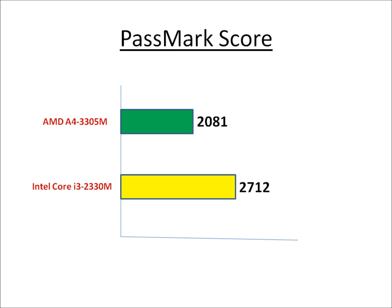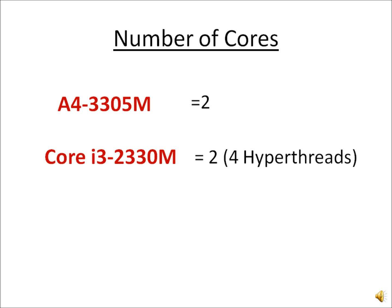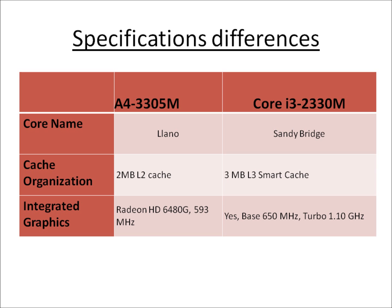In a nutshell, this Core i3's processor performance is better, as is evident from its benchmark score. One of the reasons is that Core i3 also supports hyper-threading, in addition to the higher clock frequencies.